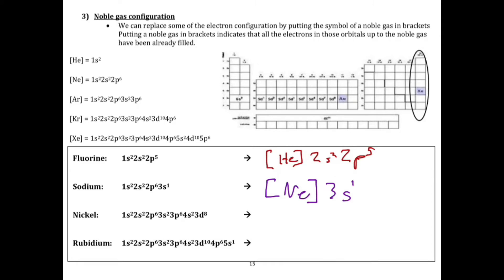I want to pause and show you something. This right here happens to be the electron configuration for neon. Notice how neon represents that electron configuration. Then we write the electron configuration for the row that sodium is in after it.